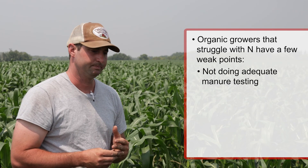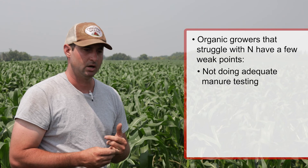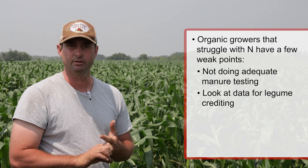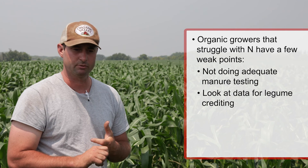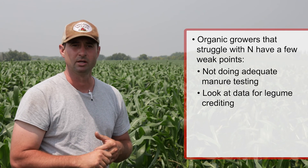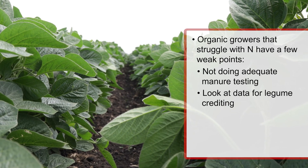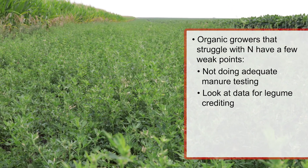The other issue is legume crediting. It's important to look at university data and the nutrient bulletins from land-grant universities and apply those appropriately — giving the proper nitrogen credit to the previous crop. Soybean credit is typically 40 to 50 pounds depending on the university. Alfalfa credit has wide variation depending on stand quality, soil type, and whether it's a first-year terminated or multi-year stand. That's where the art comes in — making an adequate assessment of that legume crop.